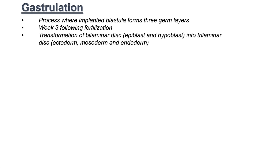Gastrulation occurs during the third week following fertilization of the egg, and it is a transformative process whereby a bilaminar disc comprising epiblast and hypoblast cells — so two layers — gets transformed into a trilaminar disc comprising ectoderm, mesoderm, and endoderm. So ectoderm, mesoderm, and endoderm are these three germ layers.